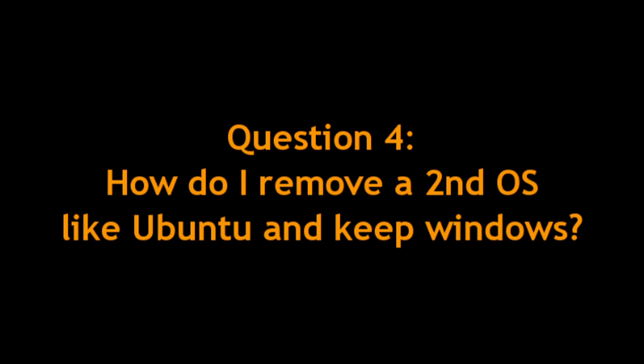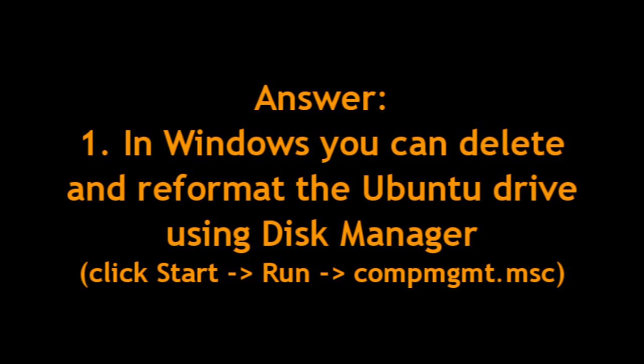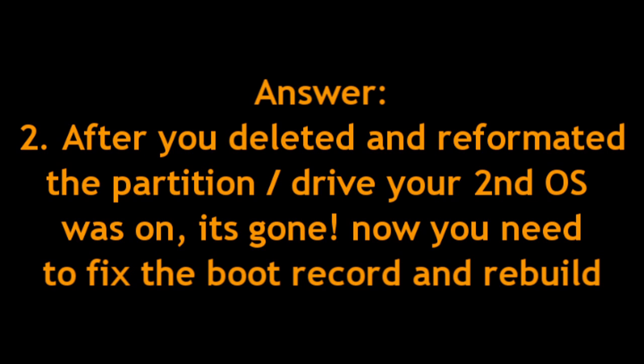Another question I've been getting is about removing a second OS like Ubuntu. The first thing I would do is go into Windows Disk Management and delete the partition that you have the second OS on — so, like Ubuntu. After you've deleted it, it's basically gone, but now you've got that dual boot menu still appearing when you boot up your machine, and you want to get rid of that.